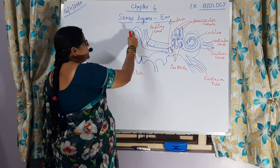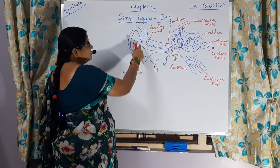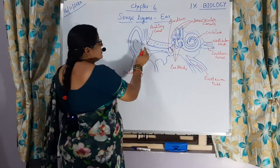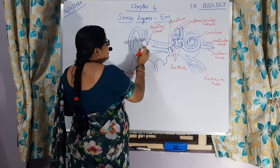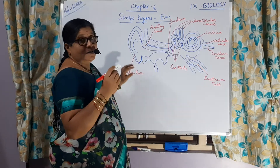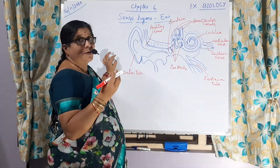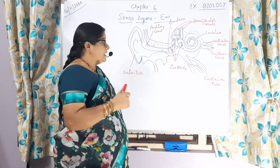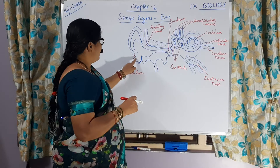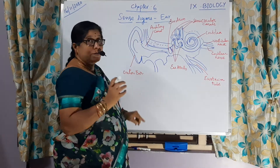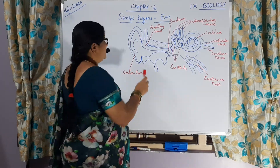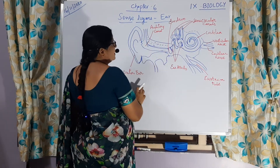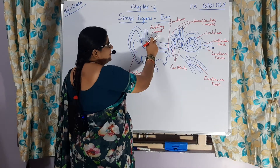The external ear includes the tympanum which helps in concentrating sounds. It continues as a canal where small tiny hairs and waxy ceruminous glands are present, which produce earwax that will prevent the entry of dust particles. The pinna or external ear helps in concentrating sounds, and this canal is called the auditory canal or auditory meatus.